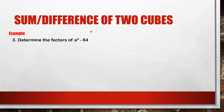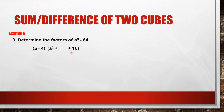Now for the difference of two cubes: we have a cubed minus 64. The cube root of a cubed is a, and the cube root of 64 is 4. For the trinomial: the first term is a squared, the last term is 4 squared which is 16, and the middle term is a times 4 which is 4a. So the factors of a cubed minus 64 are (a minus 4)(a squared plus 4a plus 16).